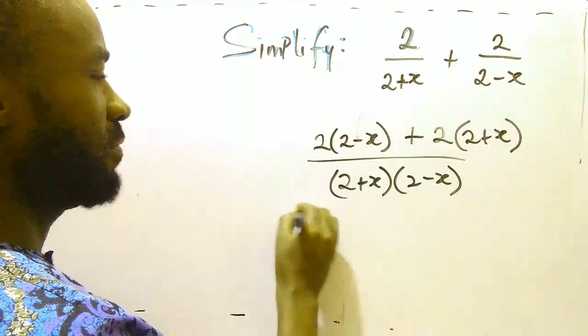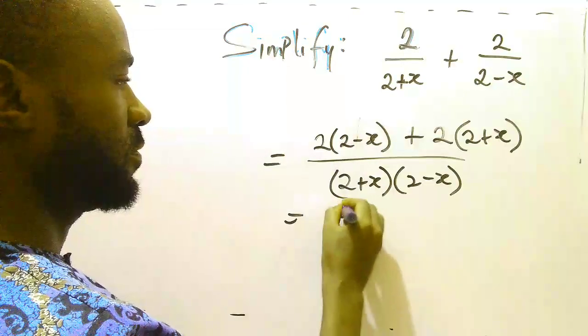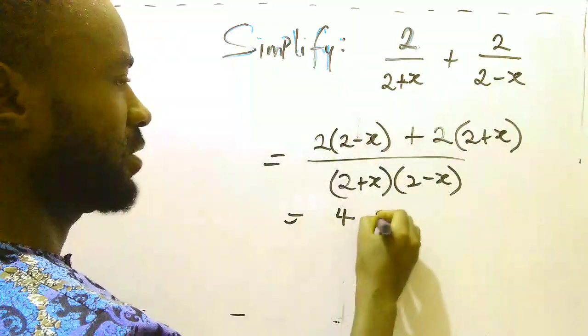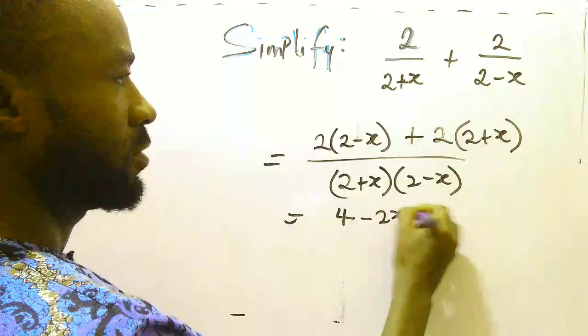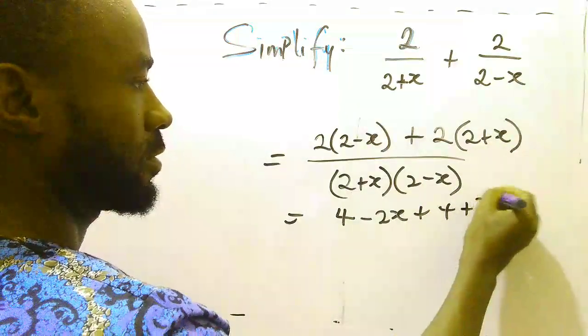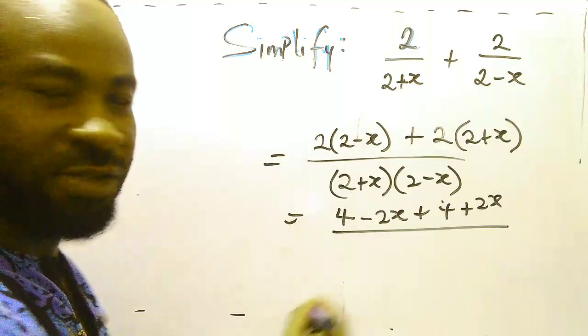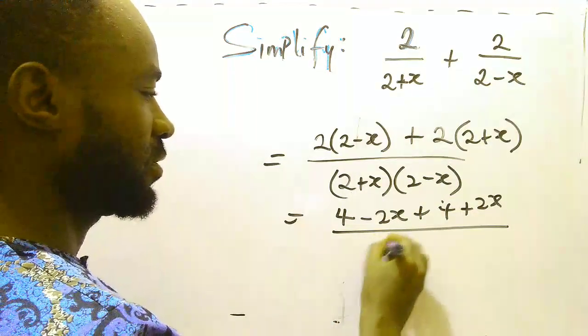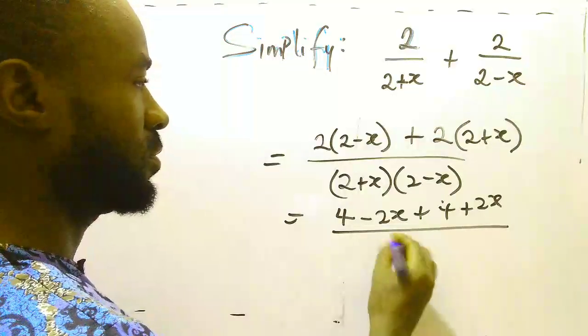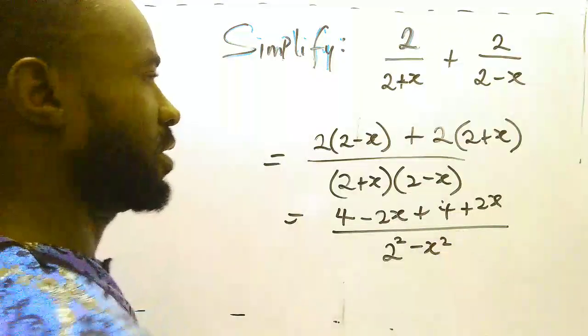And then let's expand now. 2 times 2, that's 4, 2 times x minus 2x, 2 times 2, that's 4, 2 times x, that's 2x. And then our denominator, this is what we call difference of two squares, so we can shorten it as 2 square minus x square.